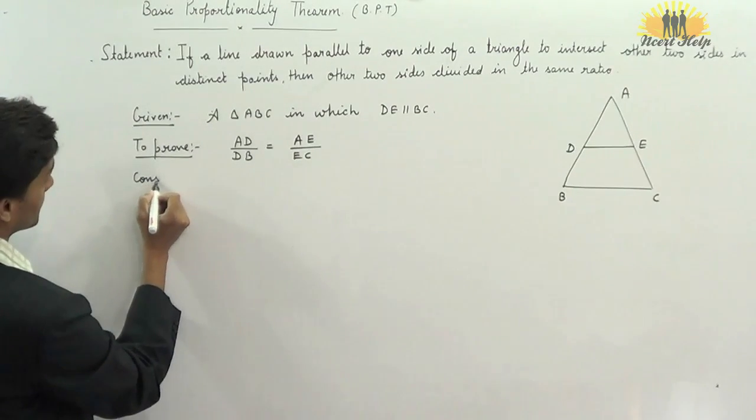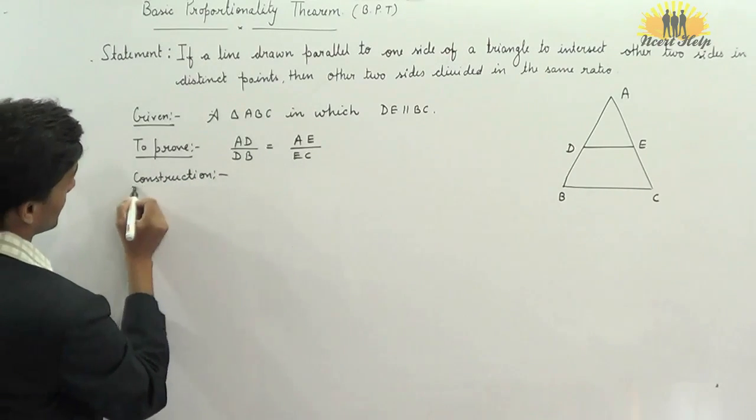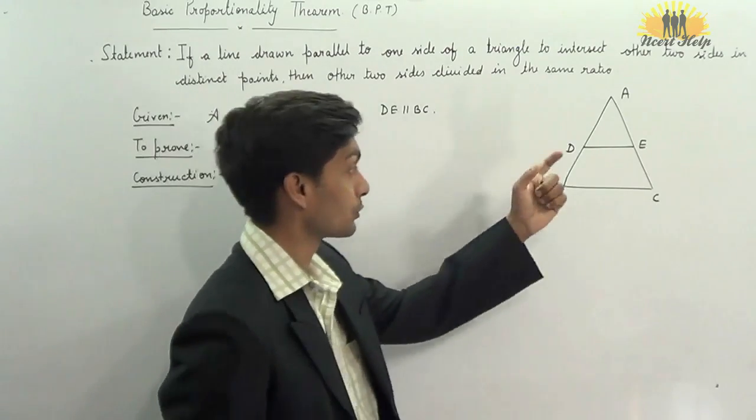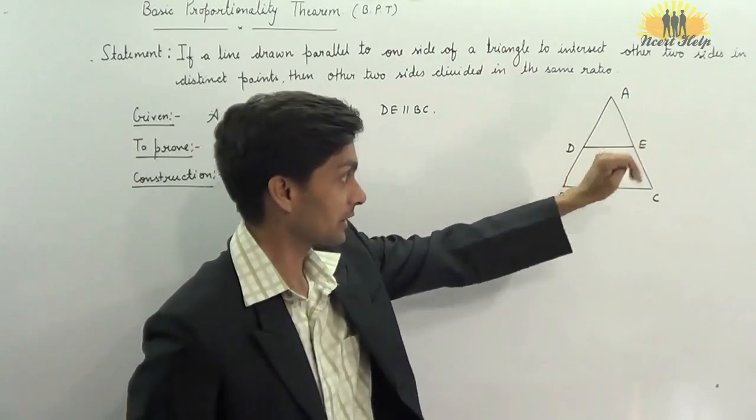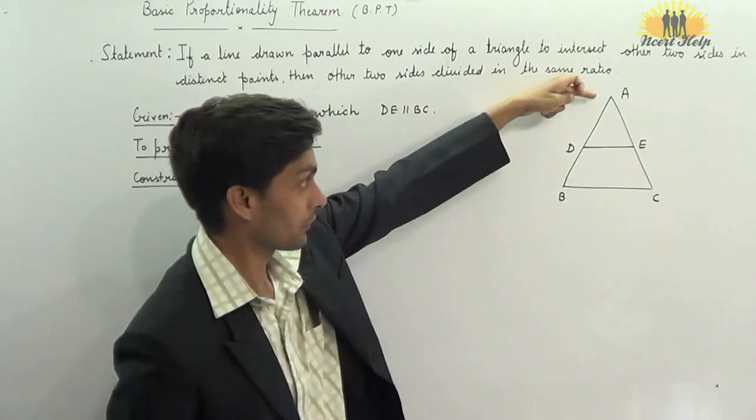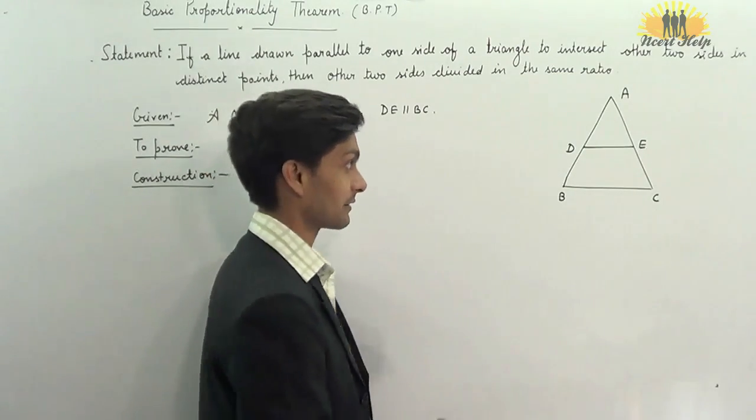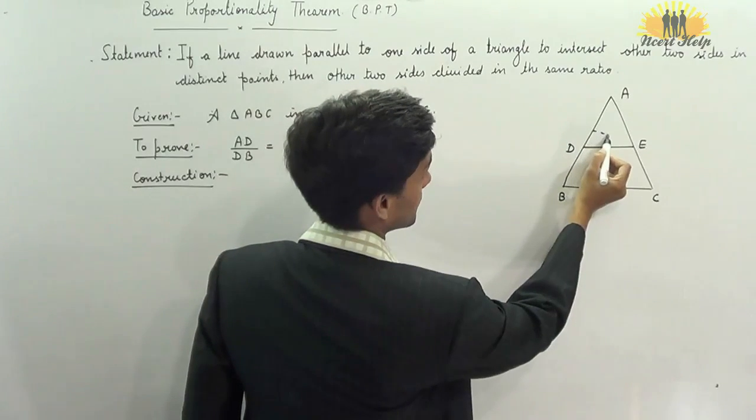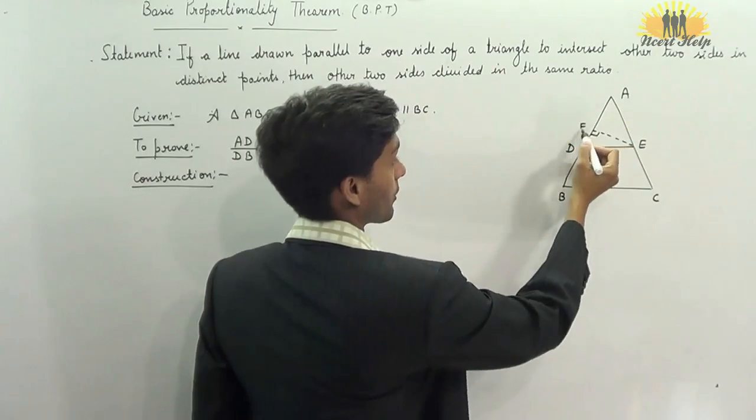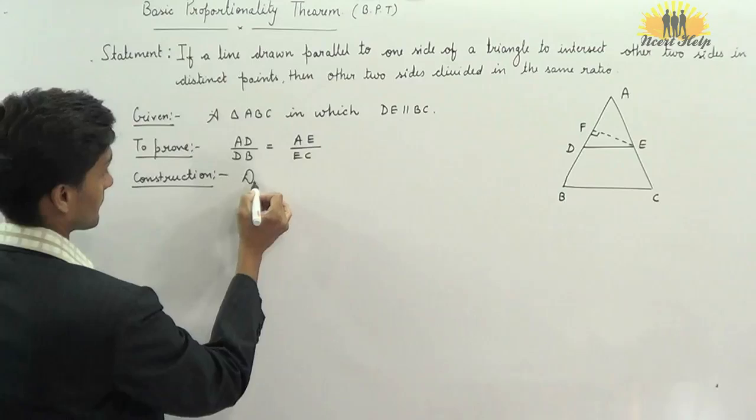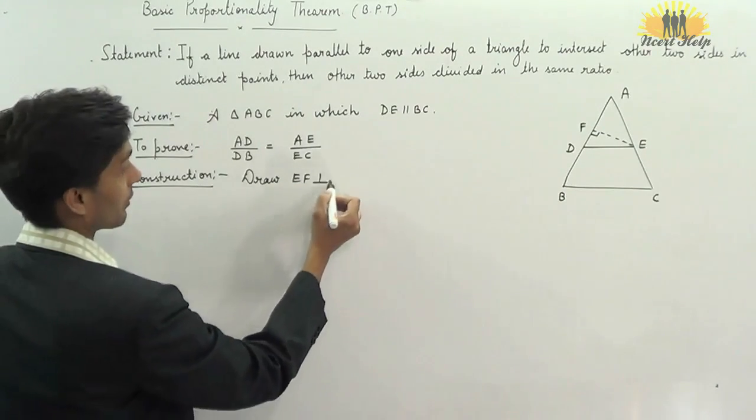For that, we have to construct something. We will use area of triangle concept. So, if you are taking triangle AD, we need to draw perpendicular. If you take AD as base, then perpendicular will be drawn from the vertex E. So, draw EF perpendicular on AD.